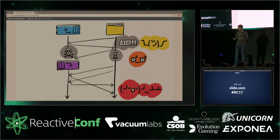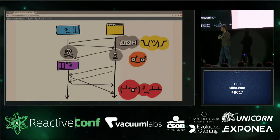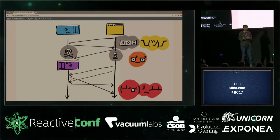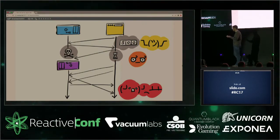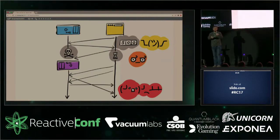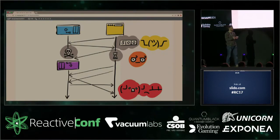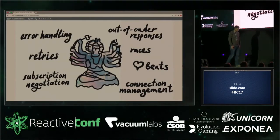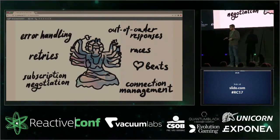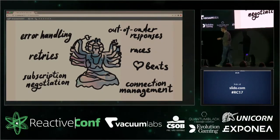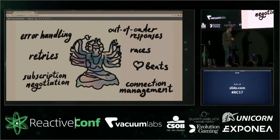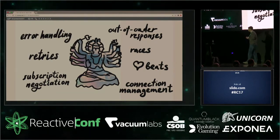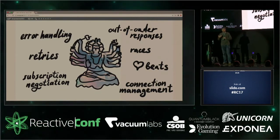In the real world all sorts of things happen: the server might die, your request might time out, you can get a response from a different server with a slightly different cache state, you'll get errors you have to deal with, and you can get responses in a different order than your requests went out. It's really really messy. But we agreed we pretend that we care about consistency and reliability.